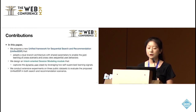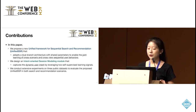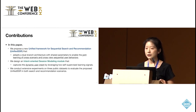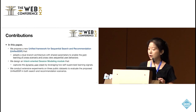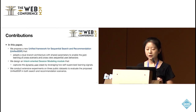To solve the above challenges, we propose a new unified framework for sequential search and recommendation that adopts a dual branch architecture with shared parameters to enable joint learning of cross-scenario and cross-view sequential user behaviors. We design an intent-oriented session modeling module that captures dynamic user intent by leveraging two self-supervised learning signals. We conduct extensive experiments on three public datasets to evaluate the proposed model in both search and recommendation scenarios.